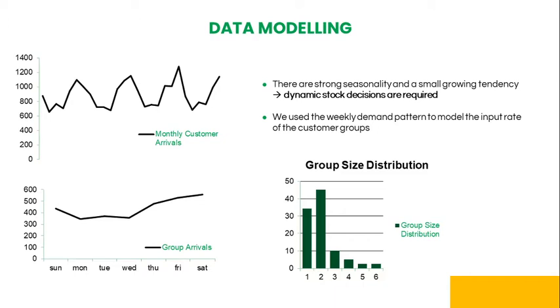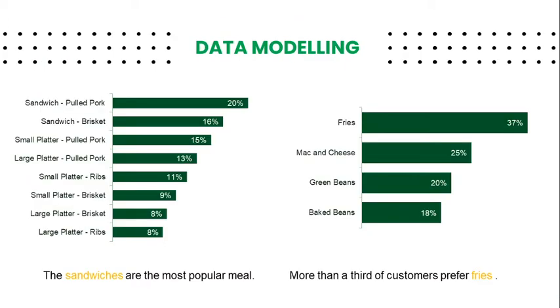We can also see that the restaurant has higher demand towards the end of the week. Most of the customers come either in pairs or by themselves. The customers can choose from 8 different meals and 4 different sides. The most popular items are sandwiches and fries.